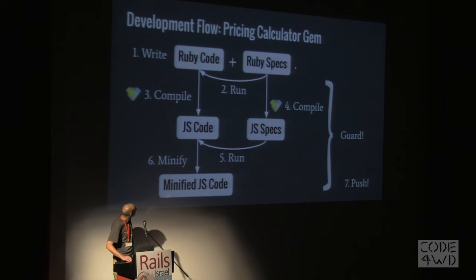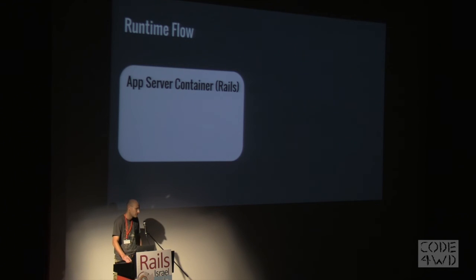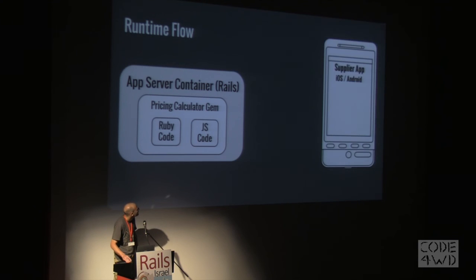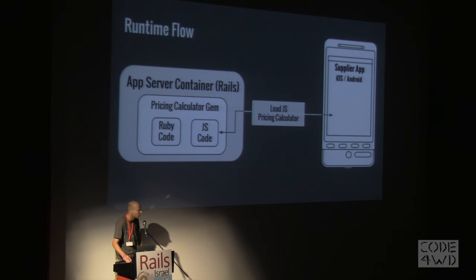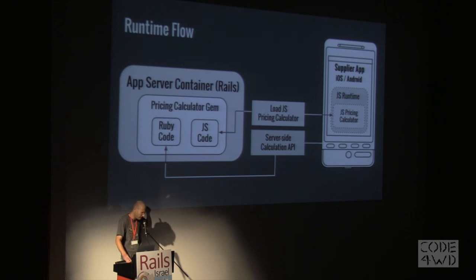In production, the gem ships as part of an app server container, which is Rails, and it just exposes some API endpoints. One of the API endpoints is that the client loads the JavaScript code at the beginning of a session into a JavaScript runtime, and has it sitting there. There is another endpoint for the regular server-side pricing calculation. The server calculation is the authority, and the client-side JavaScript version is really a fallback in case the server is not available.